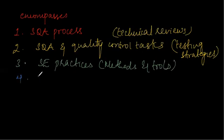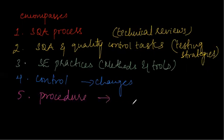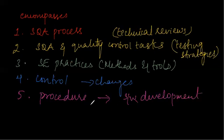The fourth component is controlling all the work that is done, and if any changes are made within the software, you follow those changes. The fifth is a procedure to ensure that the software you want to develop is actually the one you are developing. The sixth is a measurement and reporting mechanism.